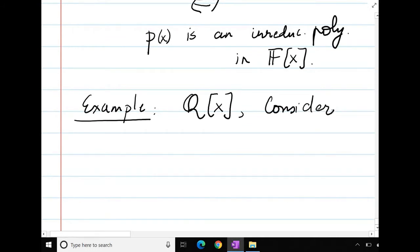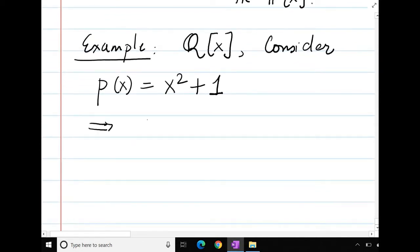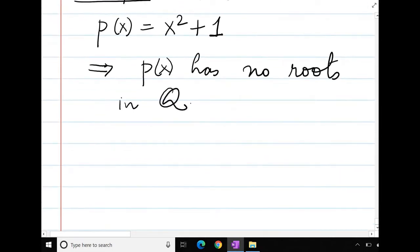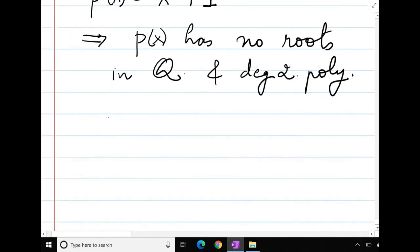Consider p(x) equal to x squared plus 1. Now we know that p(x) has no roots in Q, and this is degree 2 polynomial. Therefore we can see that p(x) is an irreducible polynomial in Q[x].